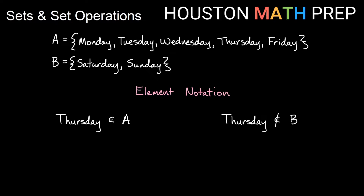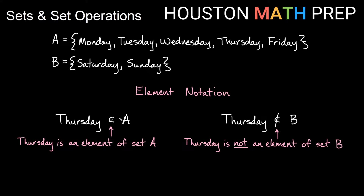If we want to talk about something being an element in a particular set then we'll use this little rounded E looking object. So this says that Thursday is an element of A — it is in set A. You can see that obviously Thursday is a weekday. If we have the 'is an element of' symbol with a slash through it, that's the same as 'not equal.' So here Thursday is not an element of set B when we have the slash through it.